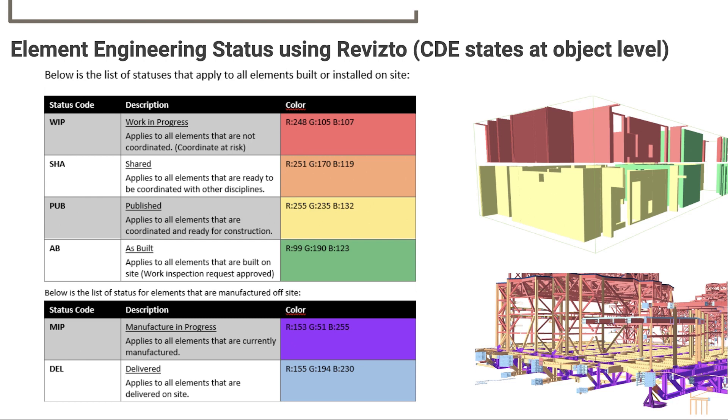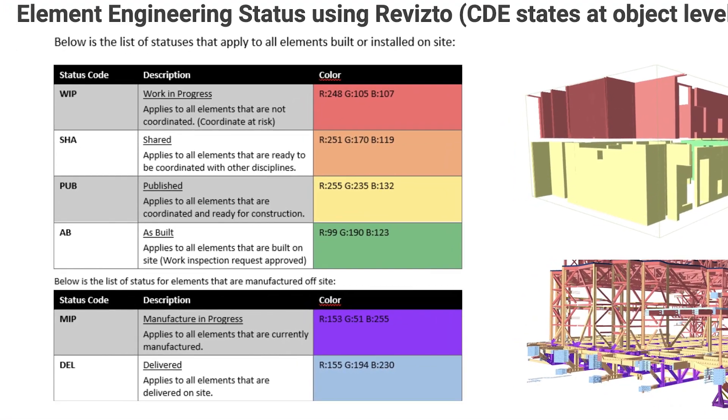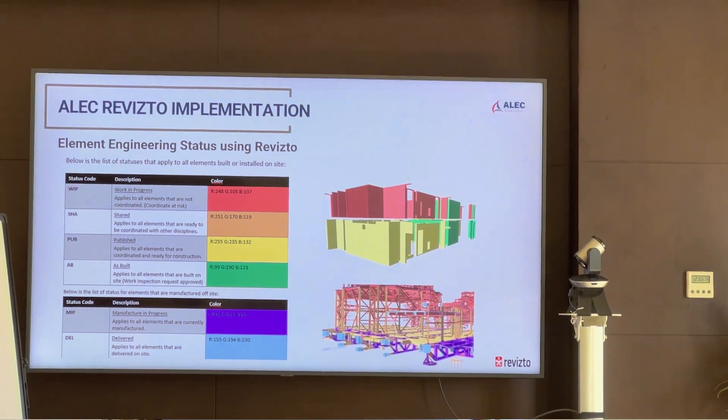Orange indicates that parts of that model are fit for coordination. If the drawings that come from the model are approved and fit for construction, then technically it's published yellow. And then once those objects or that system is installed, it will get a green colour coding that we apply in Revisto. So anyone from the operations team across the project can see at an instance the status of the model and where we are in terms of delivering.